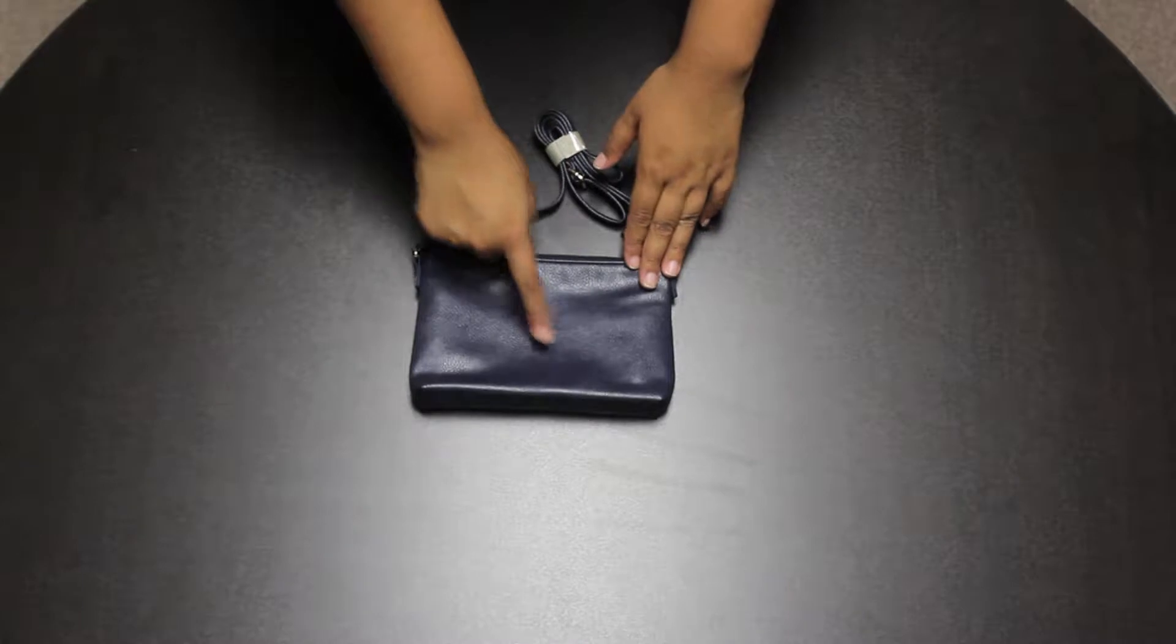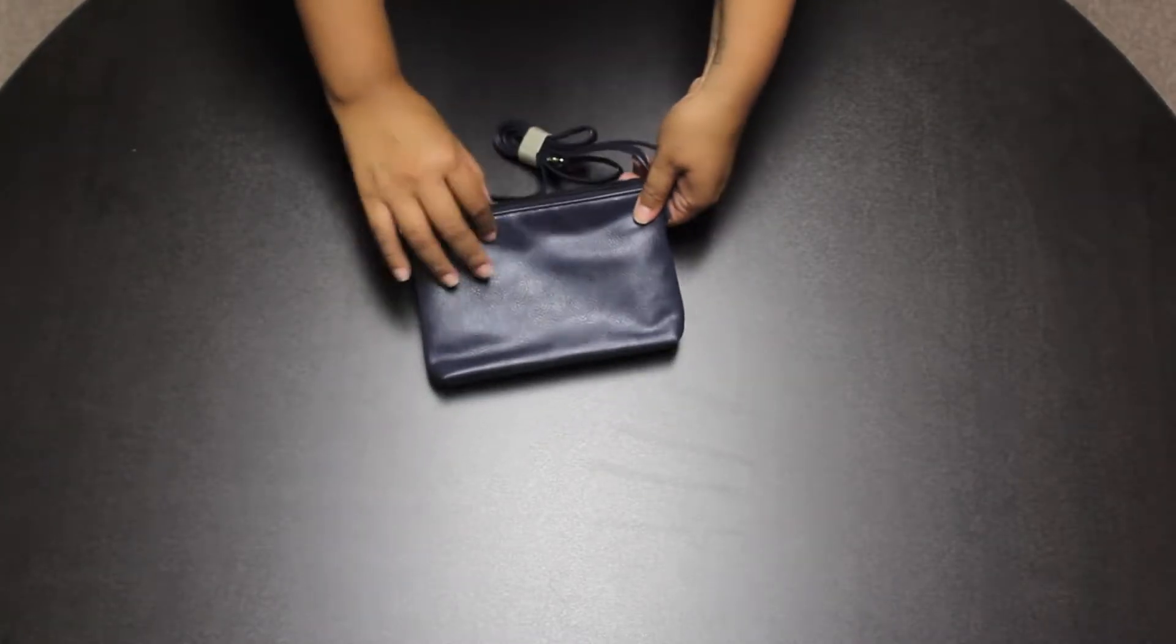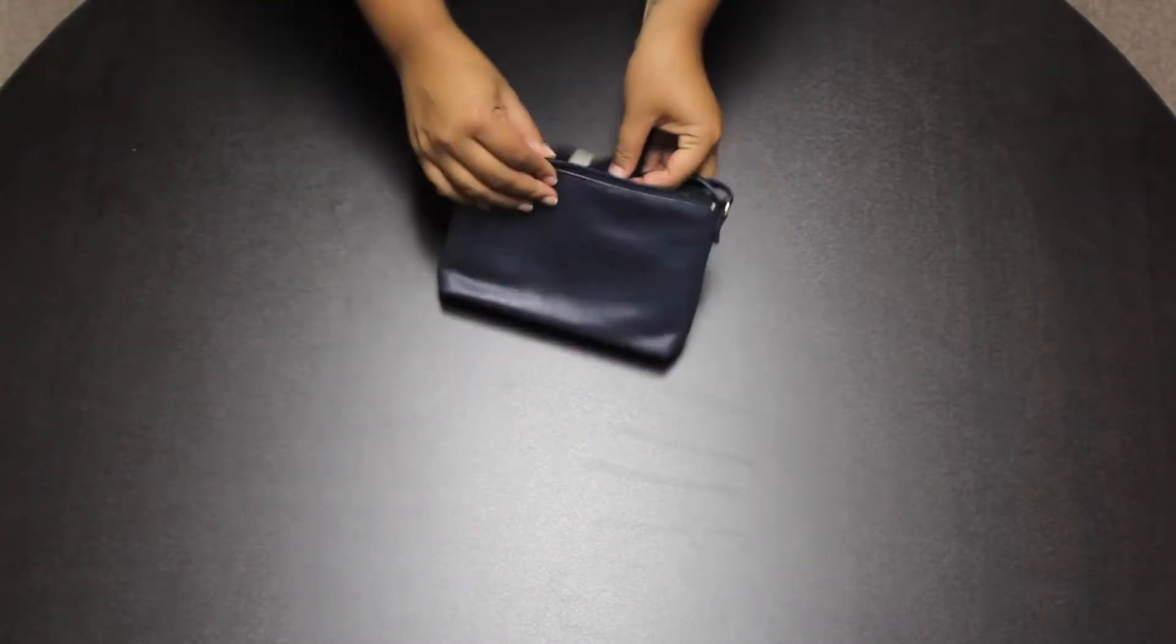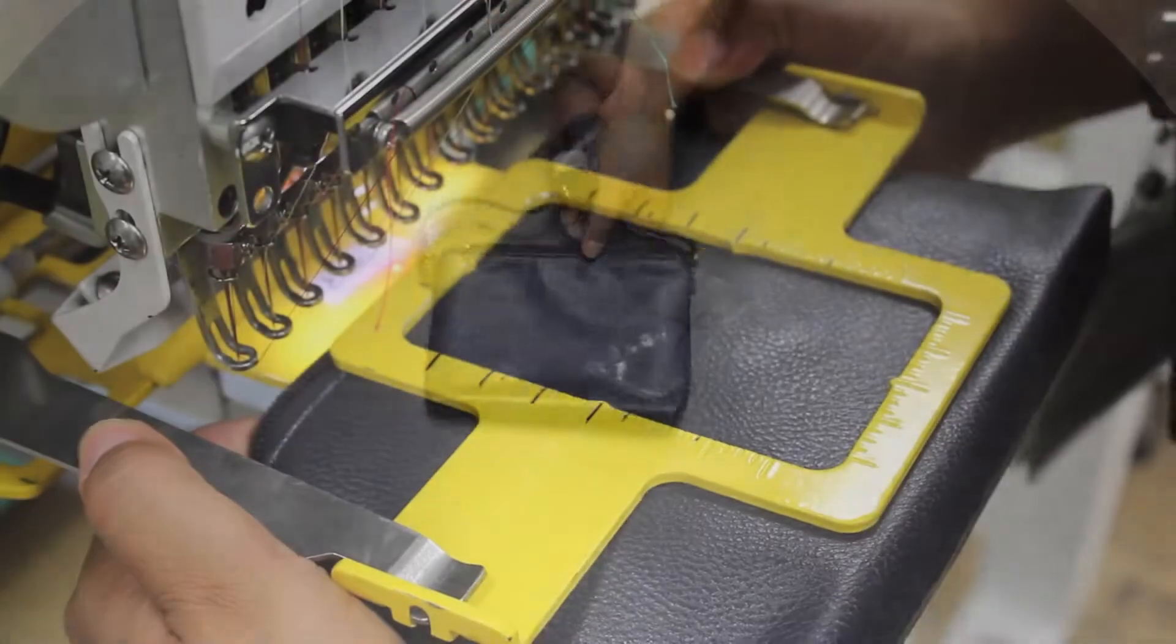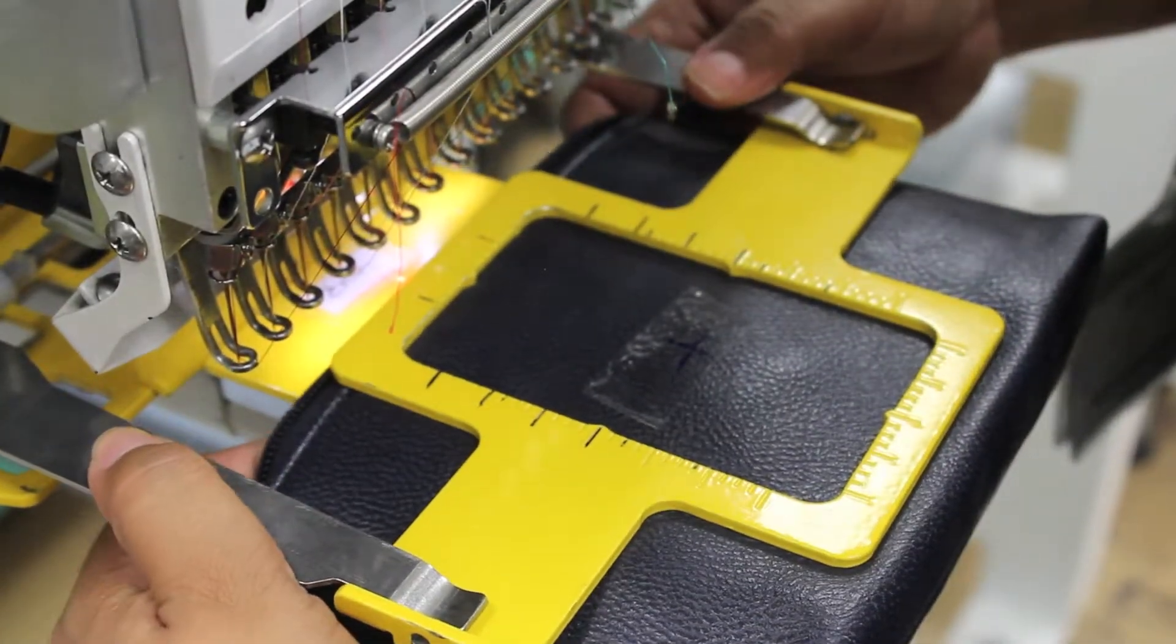Here we have our M122 Olivia Purse. Your monogram will go here on the front of the purse. Use a ruler to find the center of the purse. Use a water-soluble marking pencil to mark the center.